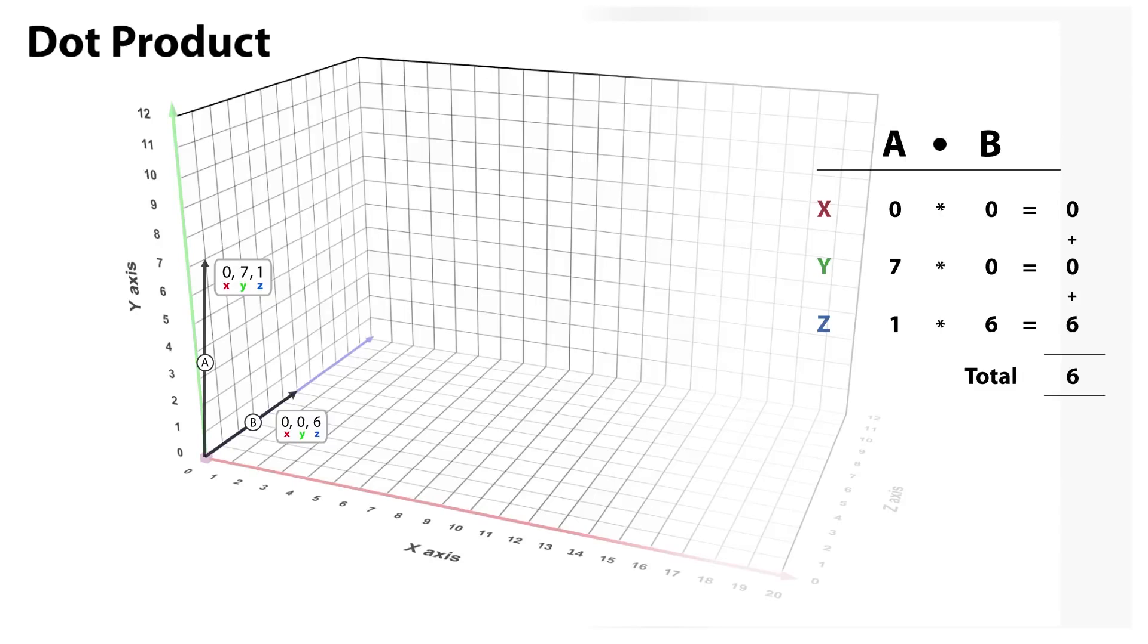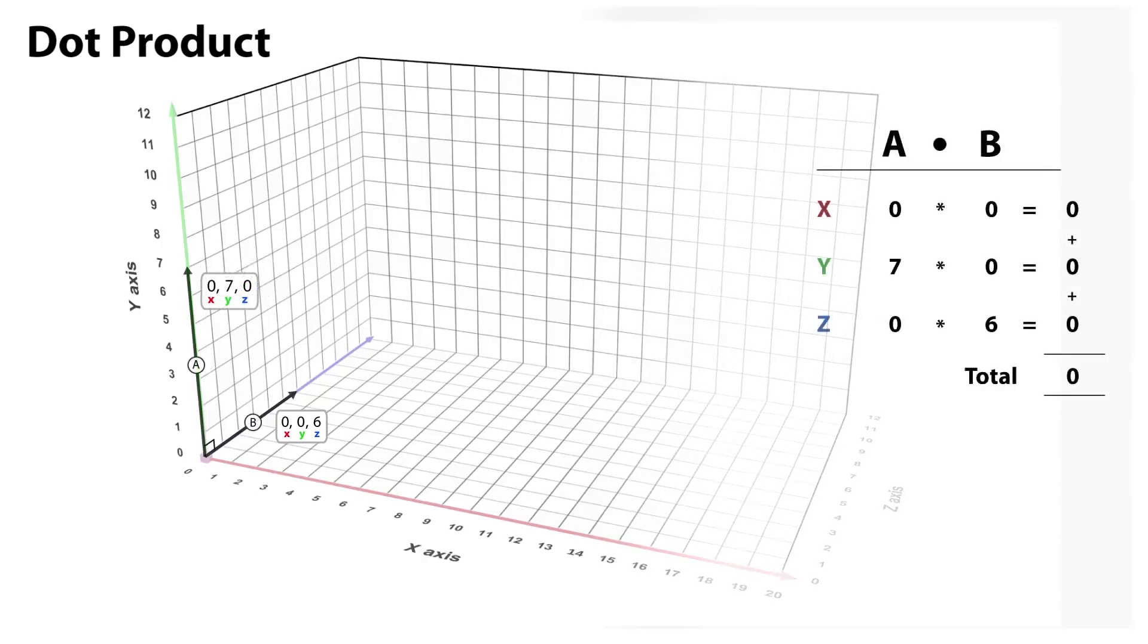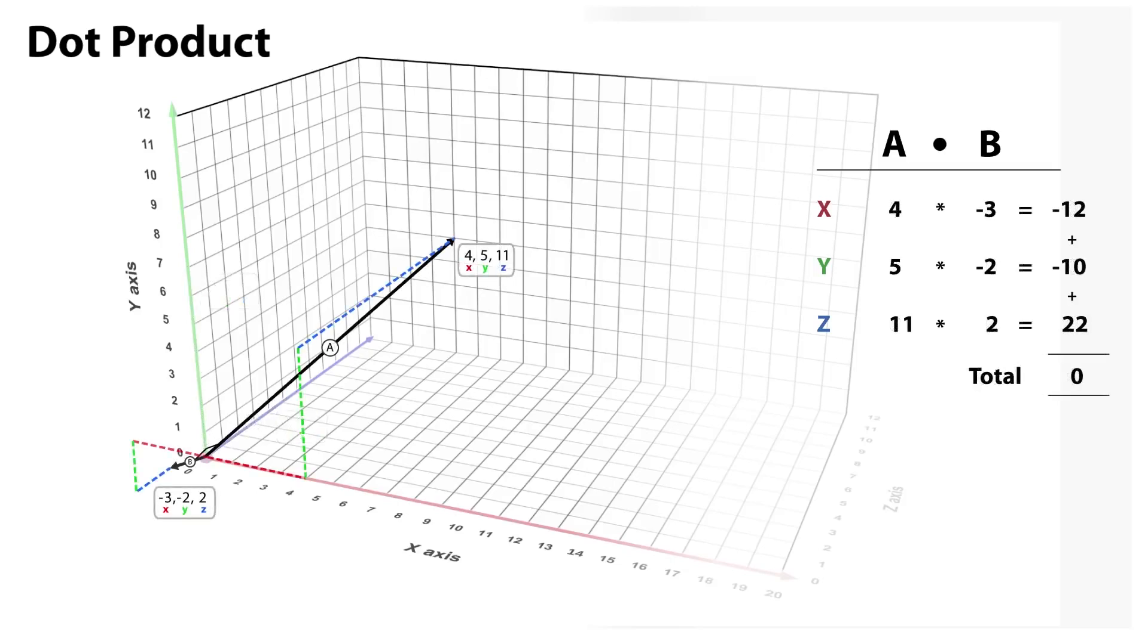In this example we have two vectors, a and b. Vector a is 0, 7, 1. b is 0, 0, 6. We can see in this example that the sum of the multiplied components is 6, which means that the vectors are not perpendicular. If vector a was 0, 7, 0 and b was 0, 0, 6, then we can see that the dot product equals 0 and the vectors are indeed perpendicular. Here is another example of using the dot product in this way.